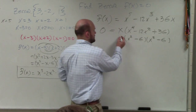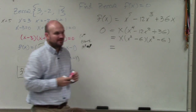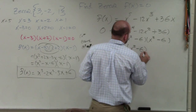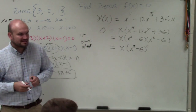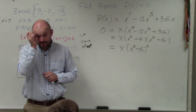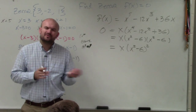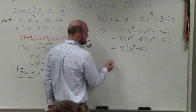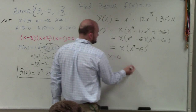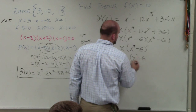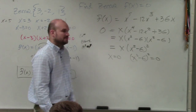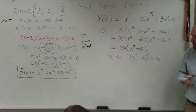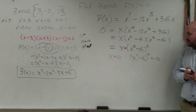Why do we like perfect square trinomials? Because we can rewrite them as (x squared minus 6) squared. Now, here's the really important thing: you can apply the zero product property. x equals 0, and x squared minus 6 squared equals 0. Since they're separated by multiplication, you set them both equal to 0 and solve.